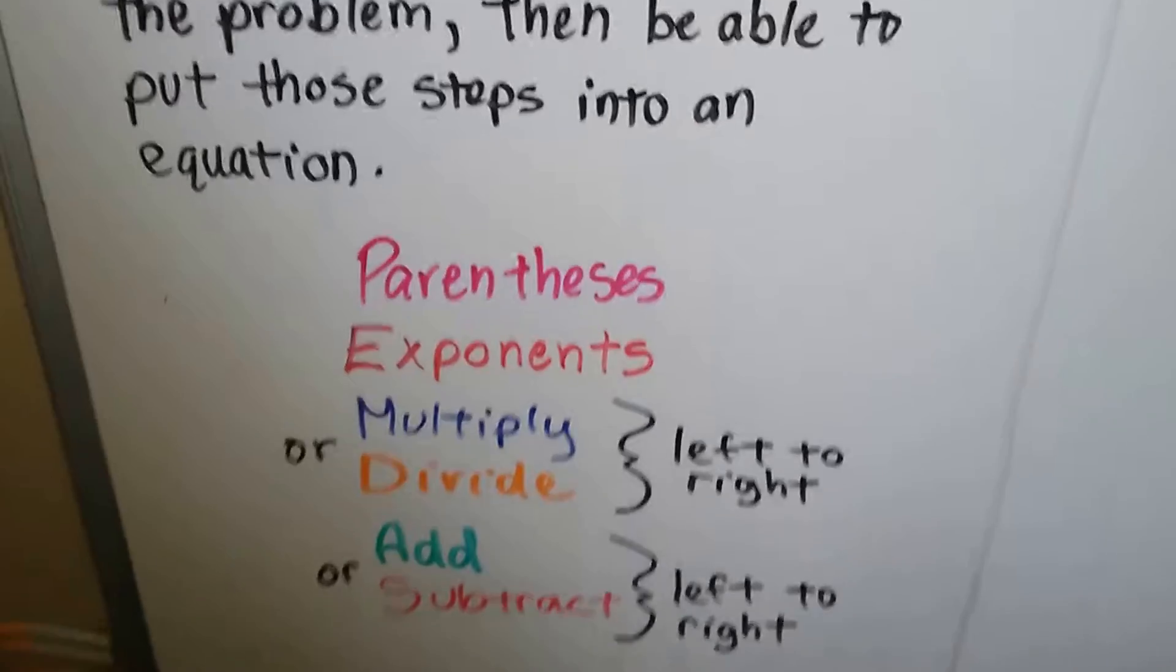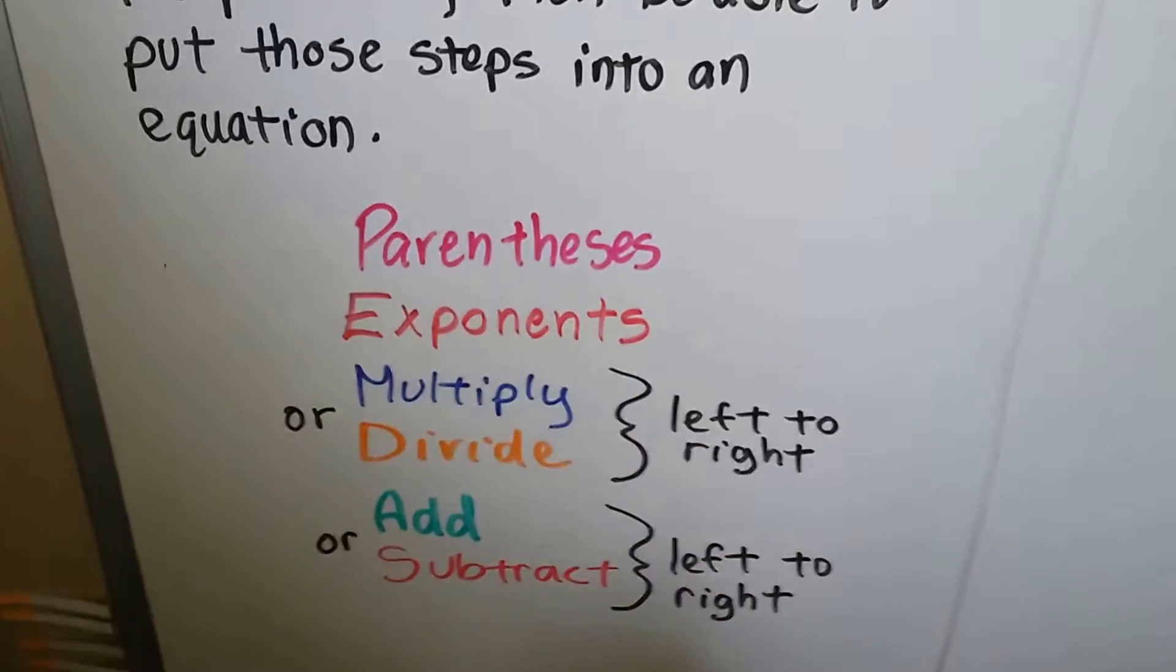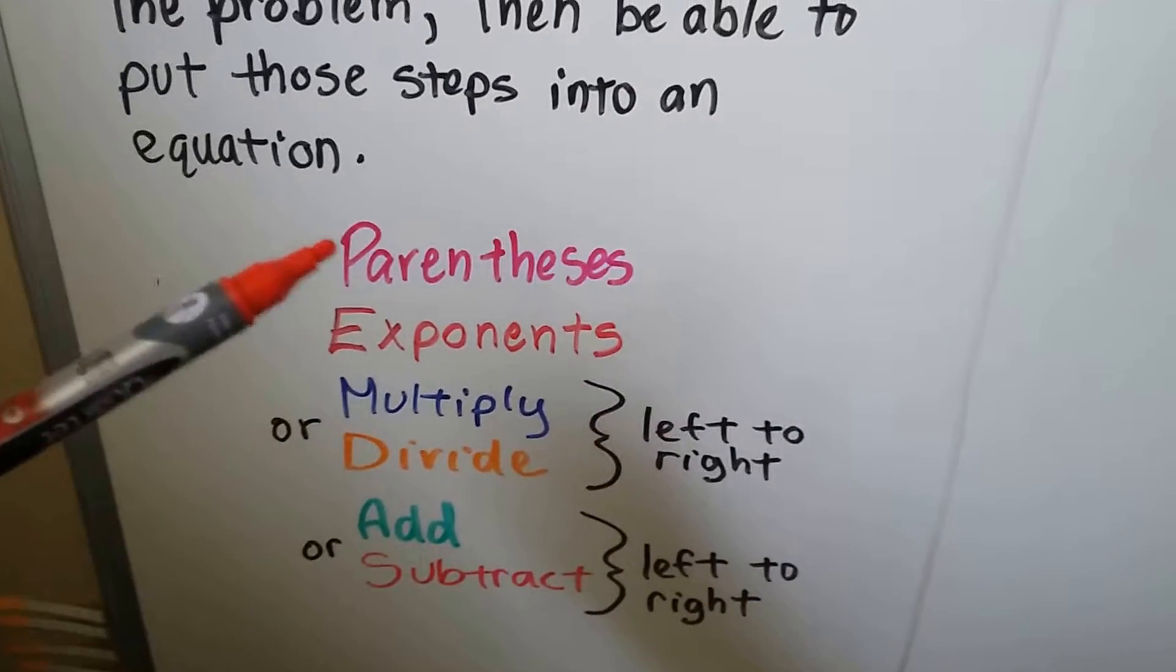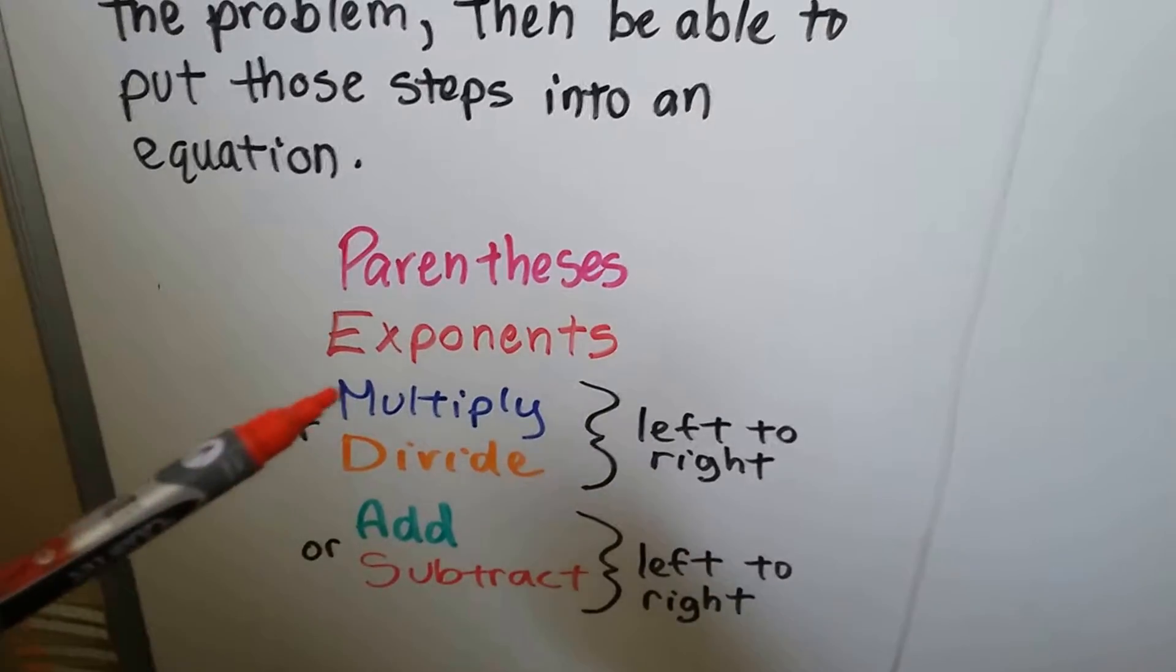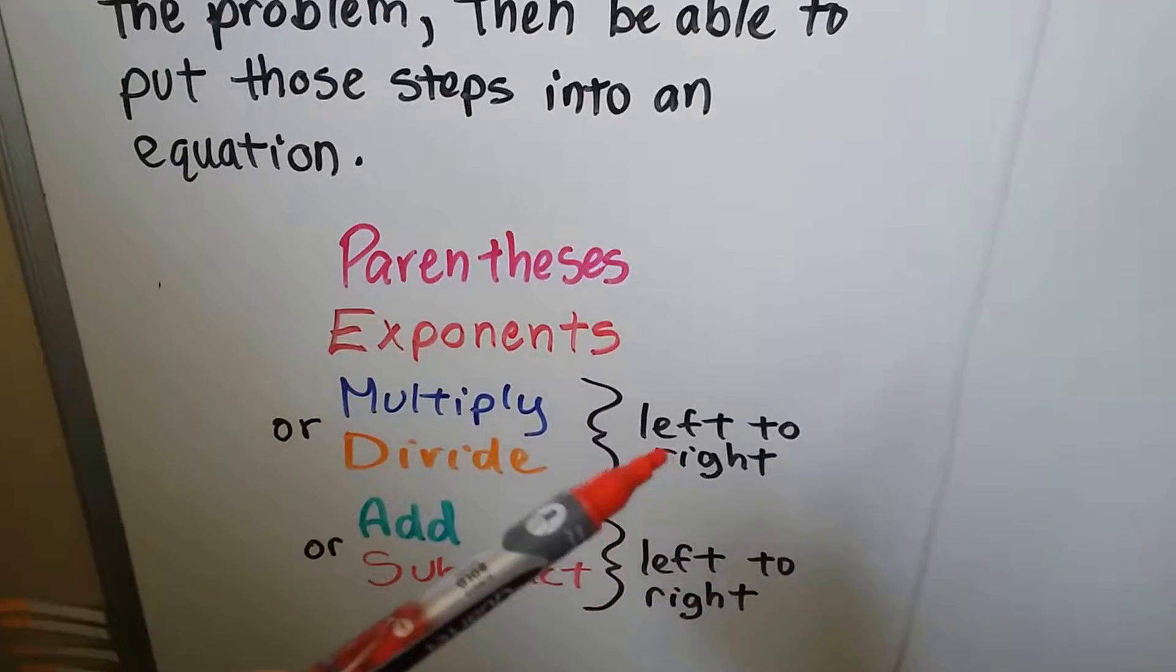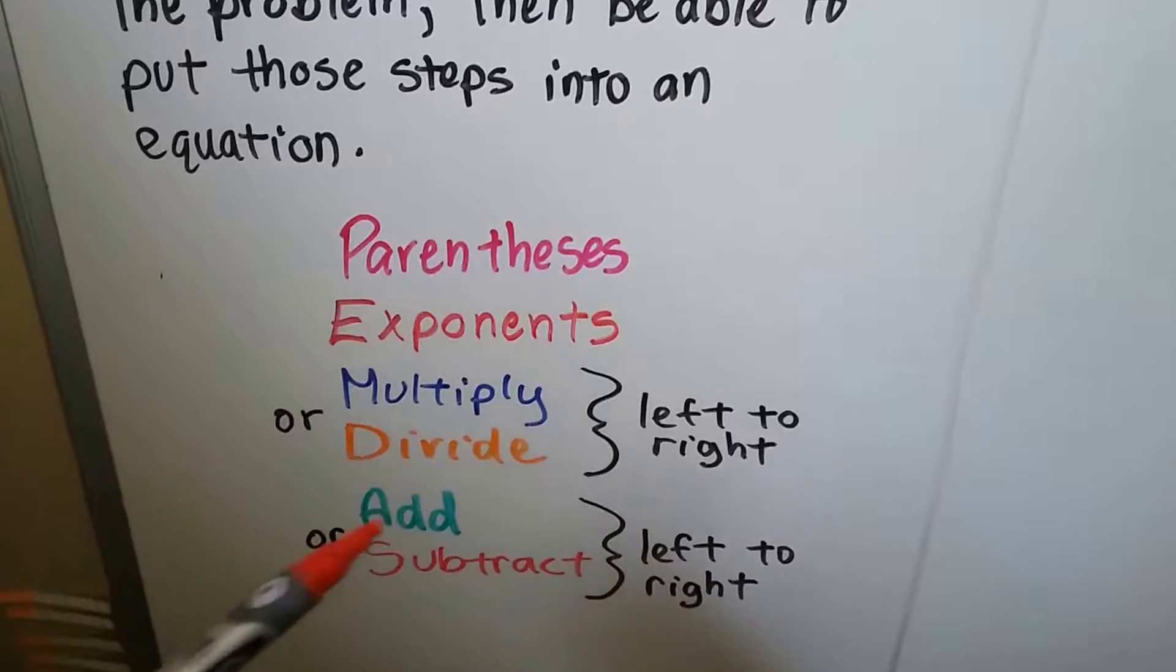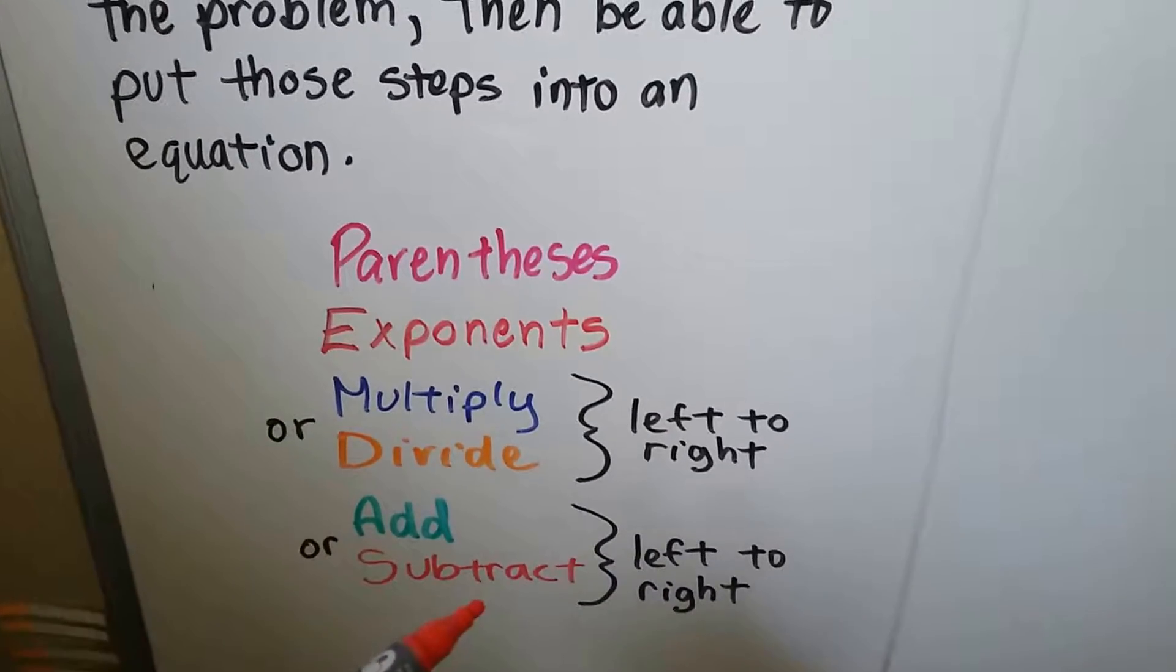As we talked about in the last couple of videos, we're doing PEMDAS, that's the order of operations. It's parentheses first, followed by exponents, then we multiply or divide going left to right, whichever comes first, and then add or subtract left to right, whichever comes first.